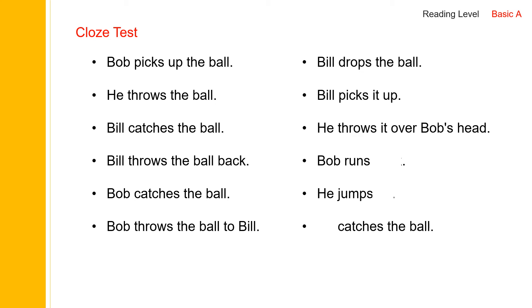Bob runs back. He jumps up. Blank catches the ball — he jumps up and he catches the ball. He catches the ball.